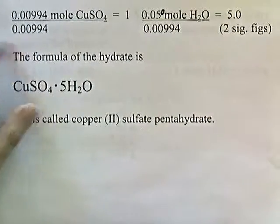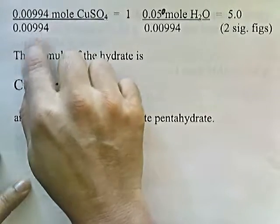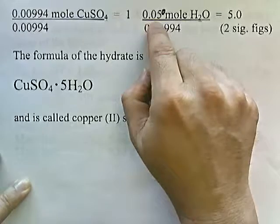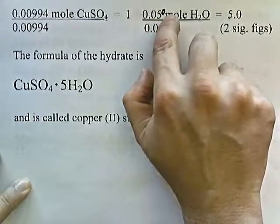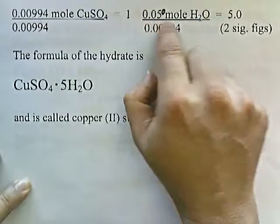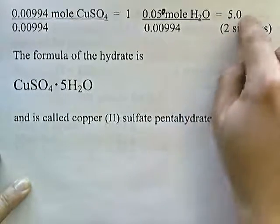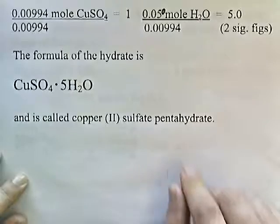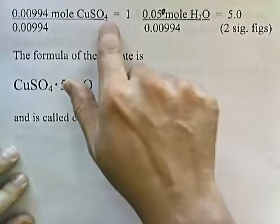0.00994 divided by itself gives 1.0. 0.050 moles of water divided by 0.00994 gives me 5. And this is two significant digits. So it looks like the ratio of copper sulfate to water is 1 to 5.